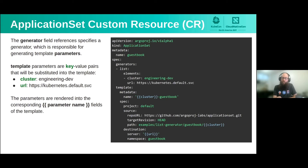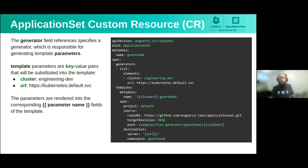So how exactly does an Application Set allow you to deploy from many different Git repositories to many different clusters? It starts with the Application Set custom resource, which has two key fields corresponding to the two major concepts: generators, which are responsible for generating template parameters, and template, which is responsible for using those parameters.